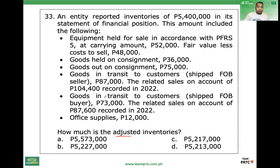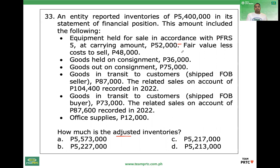First bullet point: equipment held for sale in accordance with PFRS 5. That should be reported separately — separate from inventories. So minus — erroneously included — minus $52,000.